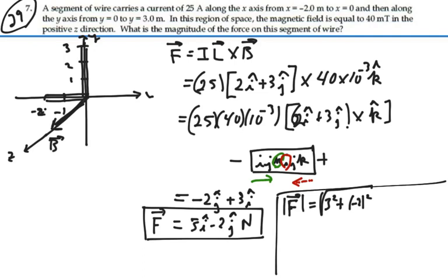So the magnitude of our force is 3.60 newtons. So that is the answer. Magnitude of the force on this segment of wire is 3.60 newtons.